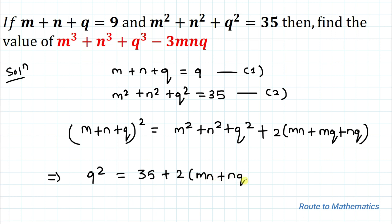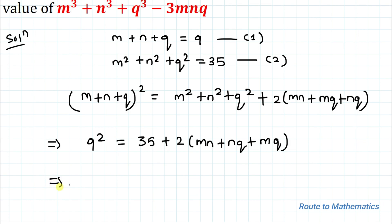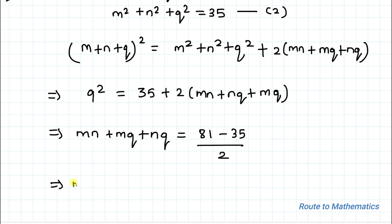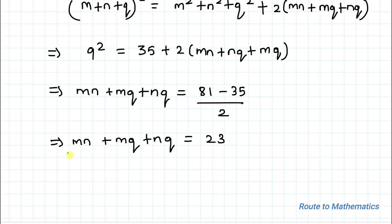This gives us 81 equals 35 plus 2 times the quantity MN plus MQ plus NQ. Solving, we get MN plus MQ plus NQ equals 23.